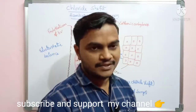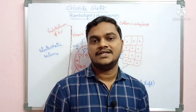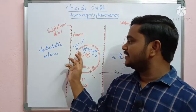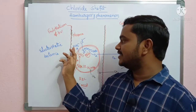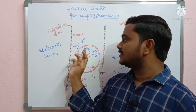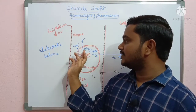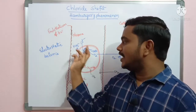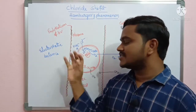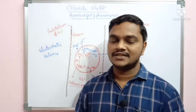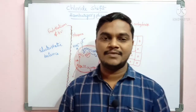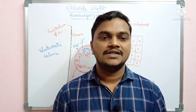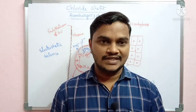Reverse chloride shift occurs in the alveoli of the lungs. In reverse conditions, bicarbonate moves back in and chloride moves out — the opposite of the original chloride shift. Thank you for watching.